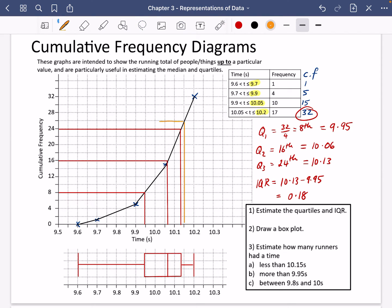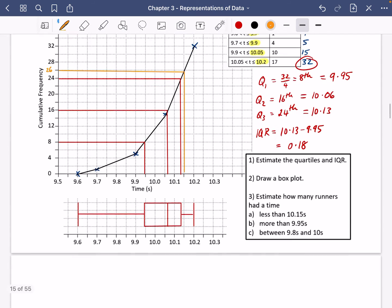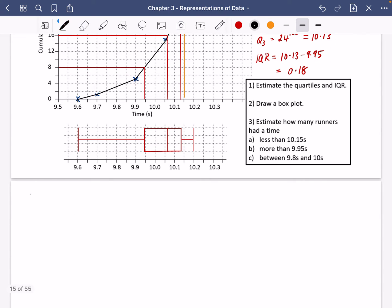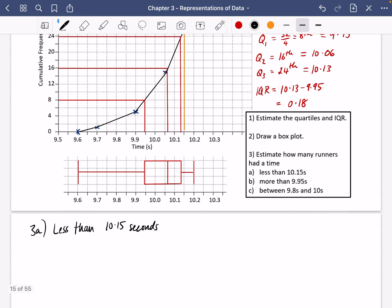And then as I draw across here, you will see that the cumulative frequency is coming across at 26. So this means that there were 26 people who had a time that was less than 10.15 seconds. So for 3A, less than 10.15 seconds, we're saying that there are 26 people or 26 items.